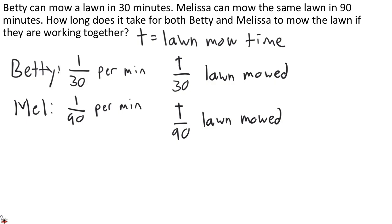Now, since Betty and Melissa are working together, the total amount of work that they have done is the amount of work that Betty has done plus the amount of work that Melissa has done. So our expression for the total work they've completed is Betty's work plus Melissa's work, and we want that to be equal to 1 whole lawn.